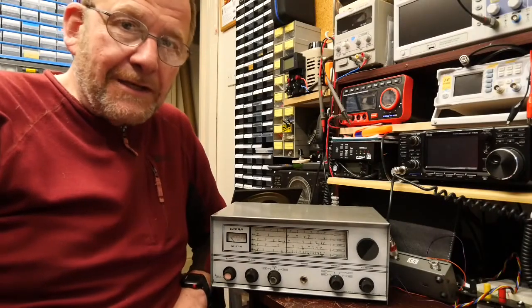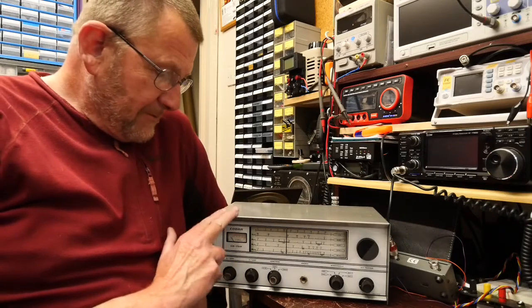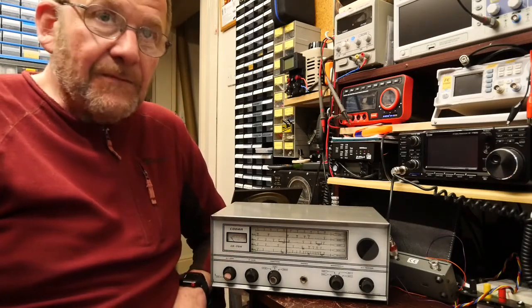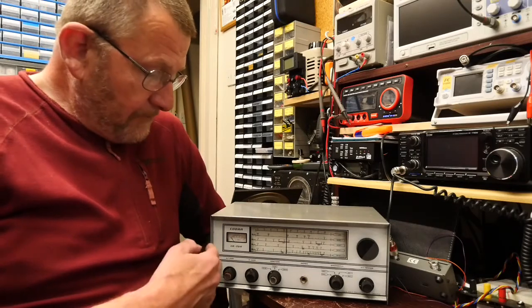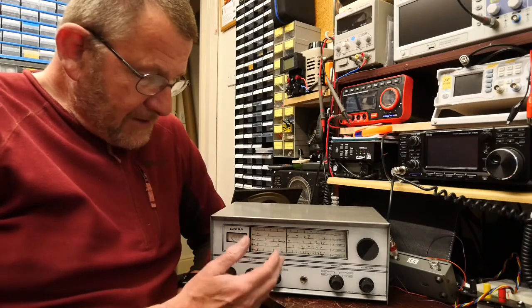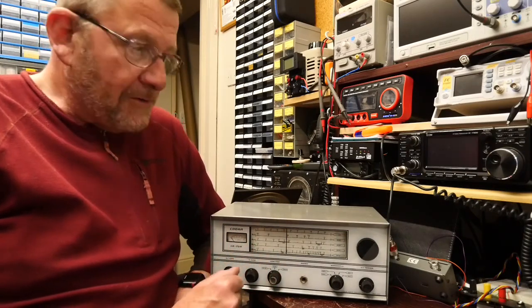Welcome to another video from Lockdown Electronics with me, Bill. This time we're going to take a look at this little beastie, which is the Kodar CR70A HF receiver. Essentially it does up to 30 megs AM and has a BFO, so it will also receive CW and SSB.